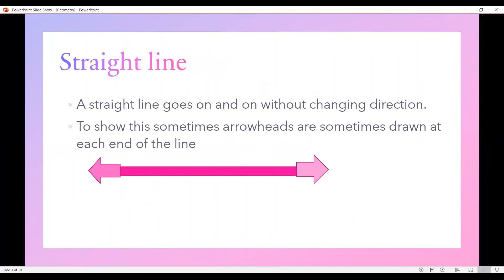A straight line goes on and on without changing direction. To show this, sometimes arrowheads are drawn at each end of the line.